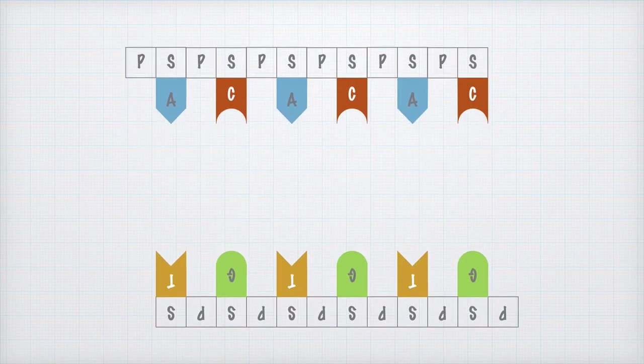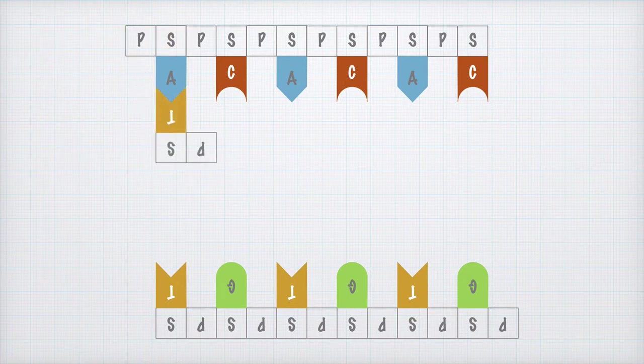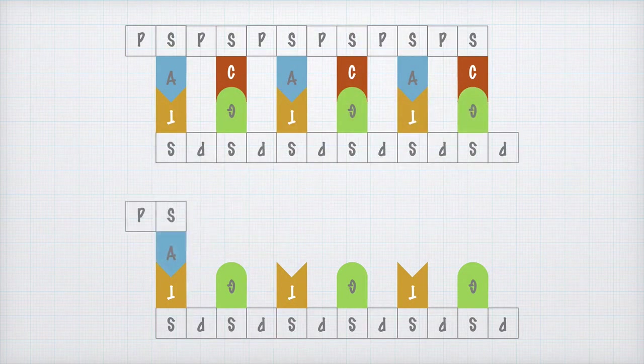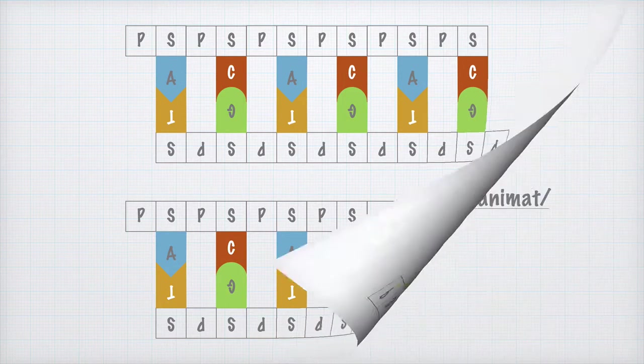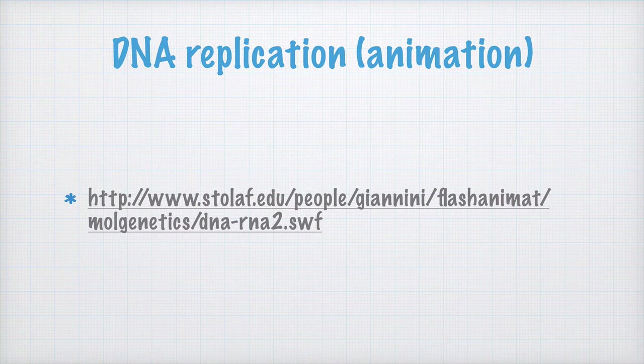Like this. If the two strands are separated from each other, two new strands can form like this, with the help of the old ones as templates. To explain in greater detail how this is done, I'll first show you an animation, which you don't have to copy, and then we'll write something to keep in our notes, too.